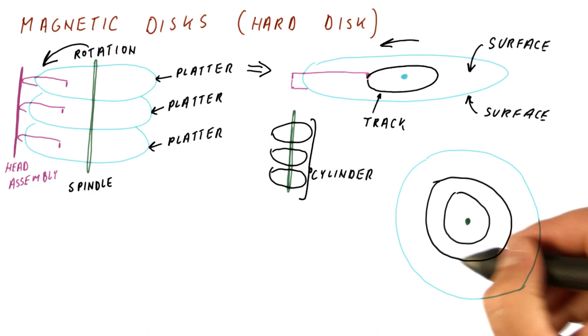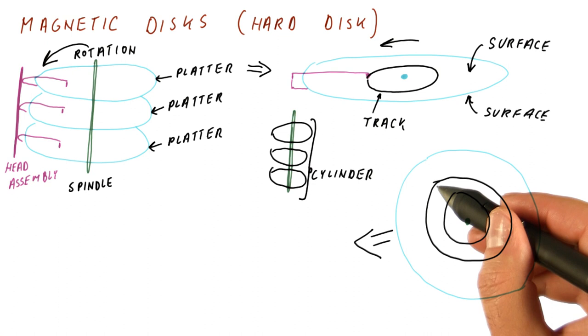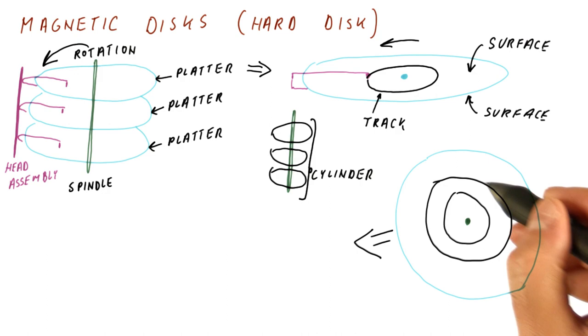And finally, on one track, we don't store data continuously through the track, because usually a lot of bits are on a single track. Instead, the data along one track is divided into sectors. And a sector will be the smallest unit that we can actually read.